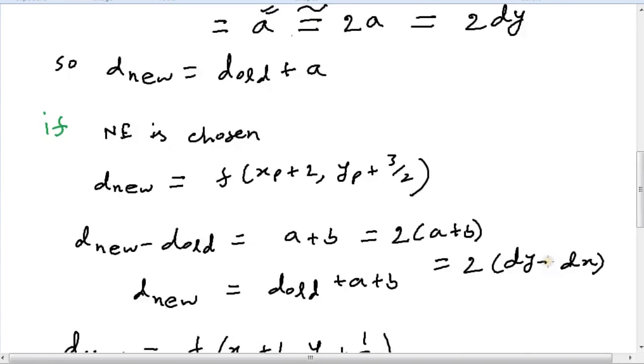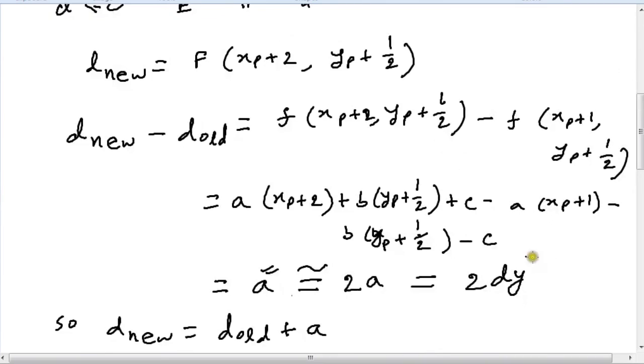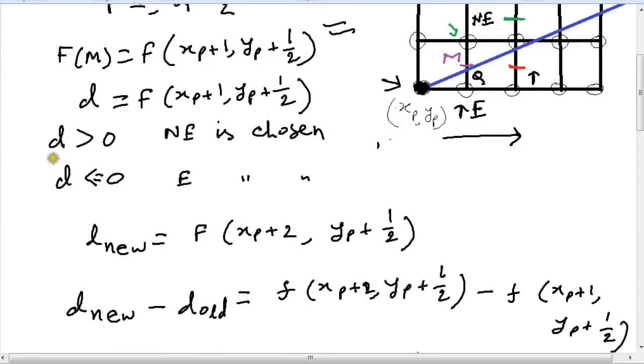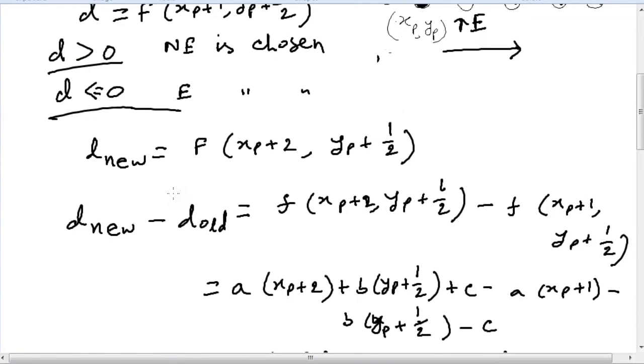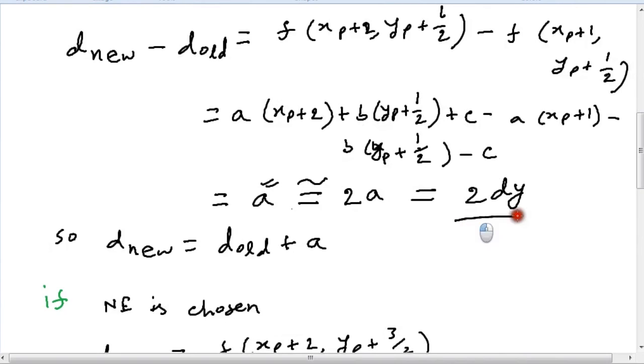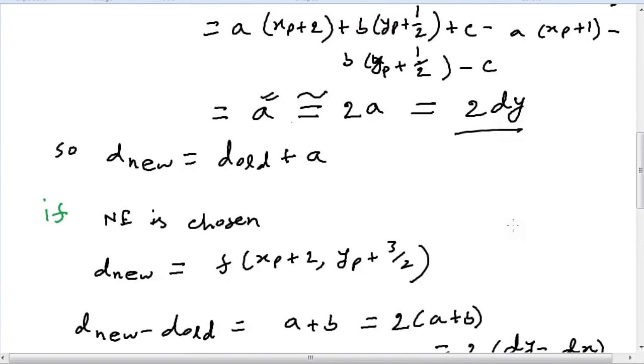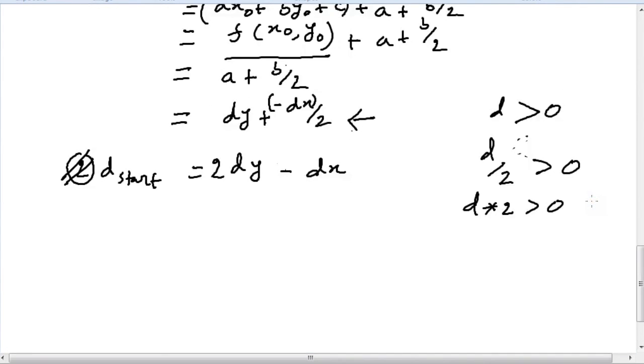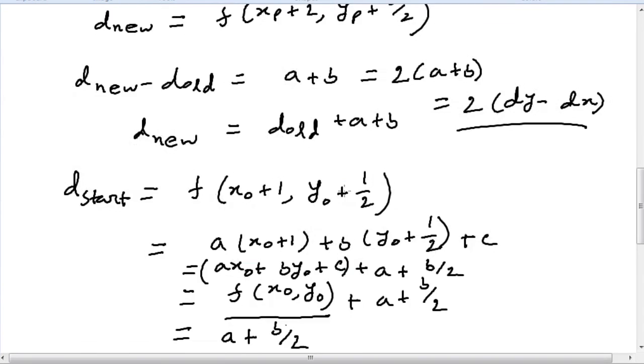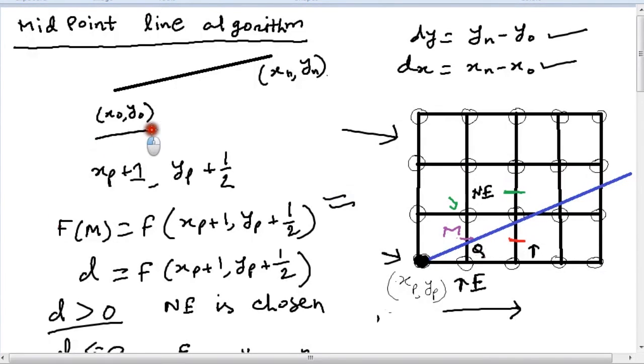So we know what to do in a line drawing using the midpoint line drawing algorithm. We have to calculate our d values. If the value of d is greater than 0, we choose NE. If the value of d is less or equal to 0, we choose E. And we know that if you choose E, the value of d will be incremented by twice dy. If NE is chosen, our value of d will be incremented by 2 into dy minus dx.